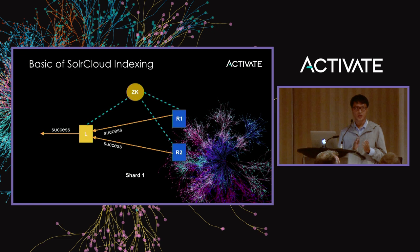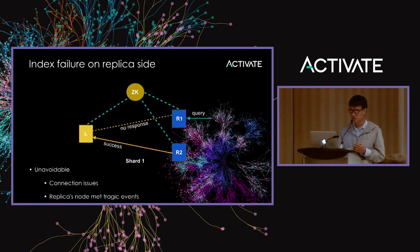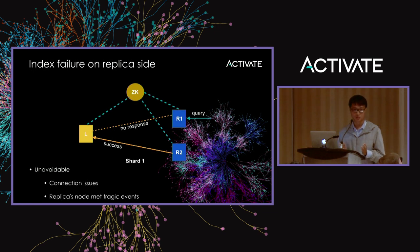This is the case when everything goes smoothly, but in any distributed system failure will happen. A typical problem is the leader failing to send an update to a replica, or after waiting for a bit of time, there's no response back from the replica. When a client tries to query that out-of-sync replica — in this case R1 — they will see stale data. So we can assume R1 is now out of sync with the leader.